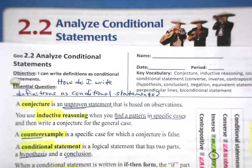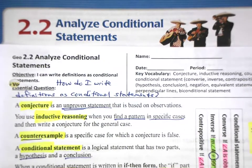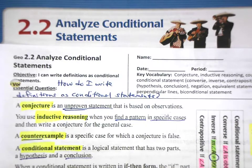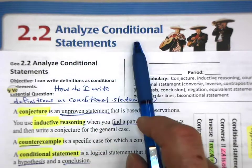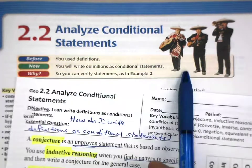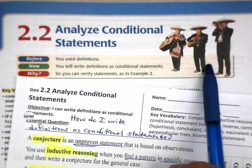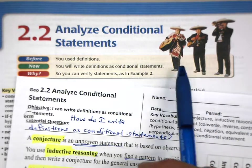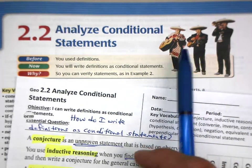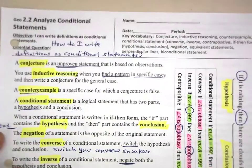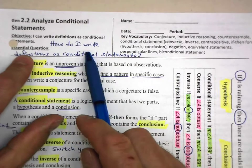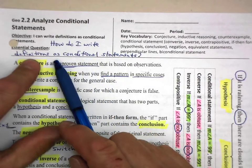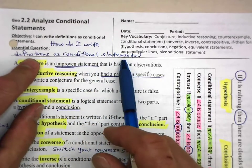Welcome to 2.2. Nice to have you with me here. We are looking at how to analyze conditional statements, and what that has to do with a mariachi band. If you have your textbook alongside of you, that'd be helpful. Our essential question: how do I write definitions as conditional statements?